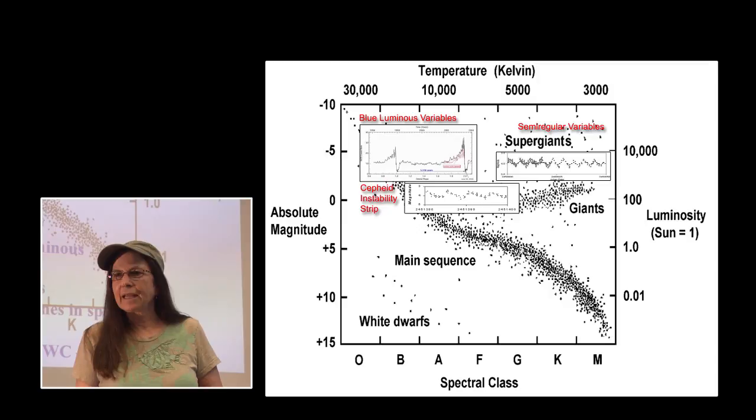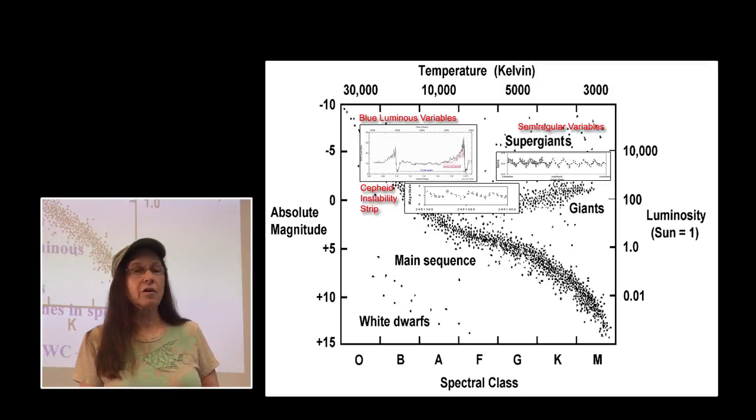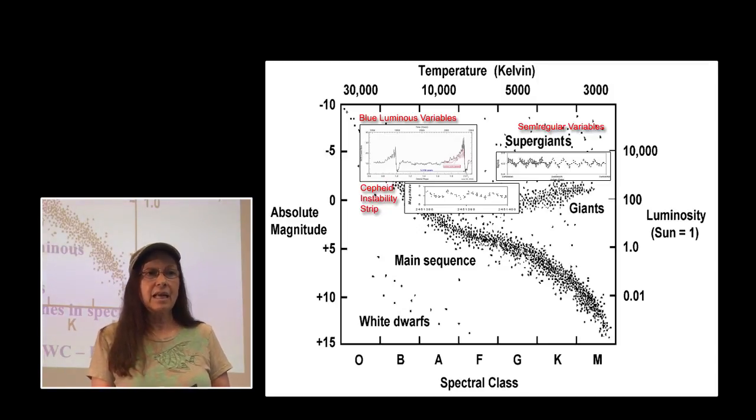Looking at the HR diagram for massive and hypermassive stars, these regions of instability are all located in the upper portion of the HR diagram. We have the blue luminous variables embedded in there, also the S Doradus instability strip in the upper left-hand section.